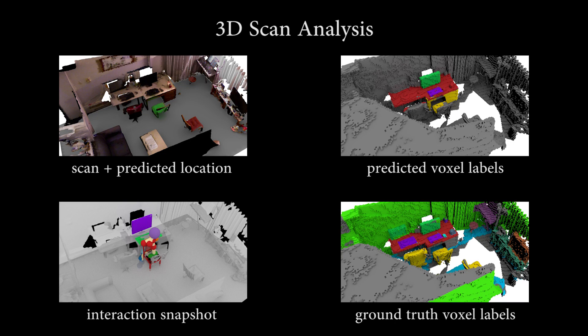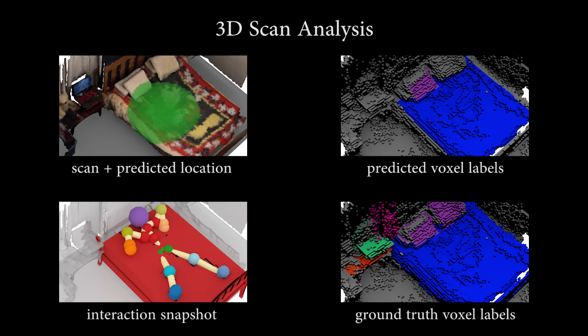Finally, we use piegraph priors to analyze 3D scene reconstructions by retrieving poses and objects to represent high likelihood actions within the scene. Here are some examples.